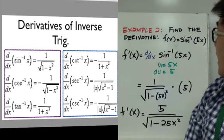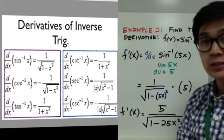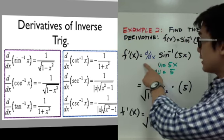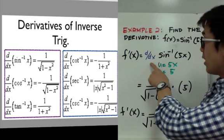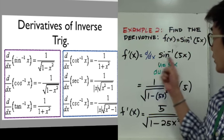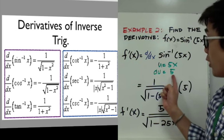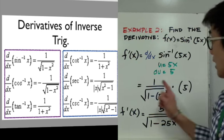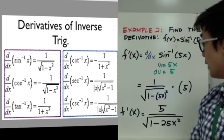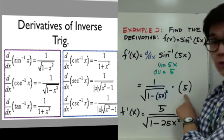Now let's have another example. We need to find the derivative of f of x which equals sine inverse of 5x. We're going to use the formula for the derivative of the inverse trig function again. f prime of x is the derivative of sine inverse 5x with respect to x. Here, u is 5x and du is 5. Using the formula for the derivative of sine inverse x, we have 1 over the square root of 1 minus u squared, where u is 5x, times the derivative of u which is 5.